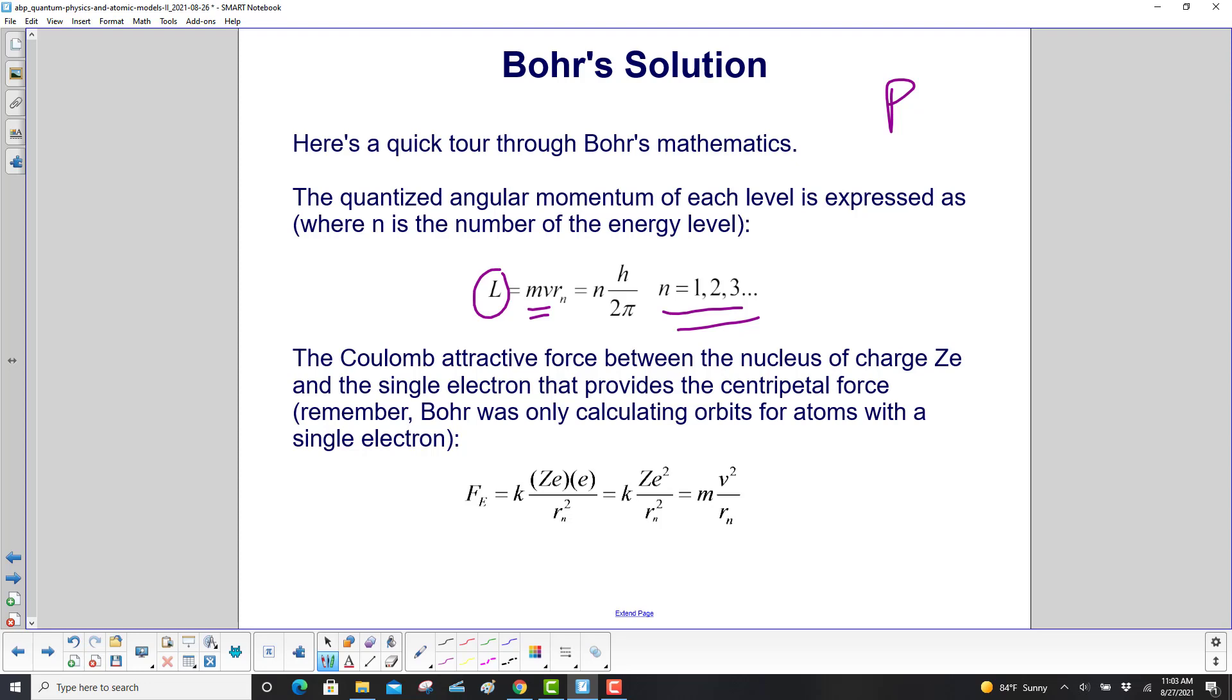The Coulomb attractive force between the nucleus of charge Ze and the single electron that provides a centripetal force, remember, Bohr was only calculating orbits for atoms with a single electron. So here's Coulomb's law, and we're just taking the magnitude of that. So that's going to be kZe² over r_n². And what does that equal? You're going in a circle, so it's good old centripetal acceleration, mv² over r.